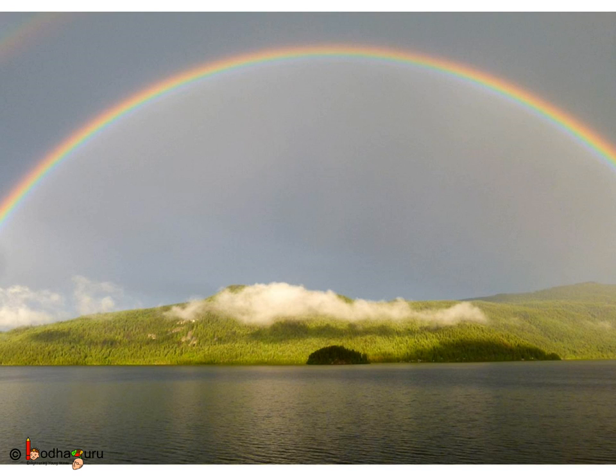Now, we know that a rainbow has seven colors. Each color of light has different wavelength. We know that red has the longest wavelength and low frequency, whereas violet has the lowest wavelength, which means it has the highest frequency.